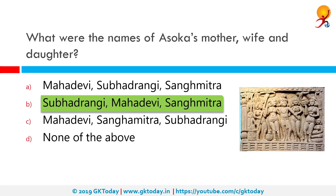Ashoka the Great was born in 304 BCE to Emperor Bindusara. Bindusara was the son of Emperor Chandragupta Maurya, who was the founder of the Maurya dynasty. Ashoka was the third emperor of the Maurya dynasty and ruled the Indian subcontinent from 262 to 238 BCE. He ruled for 36 years and died at the age of 72 in 238 BCE.